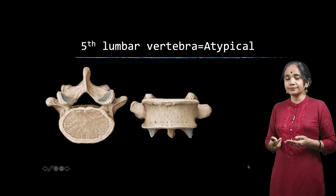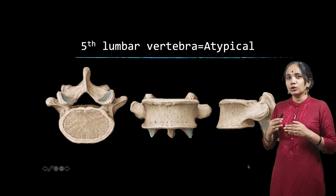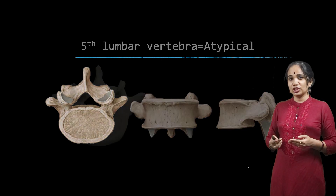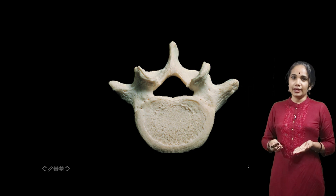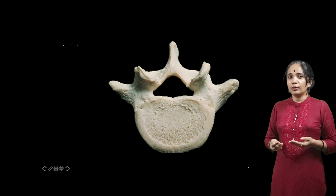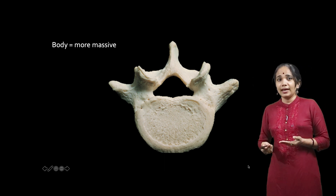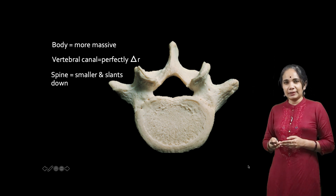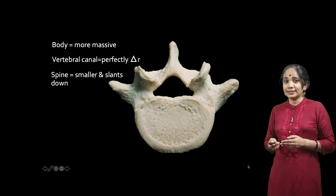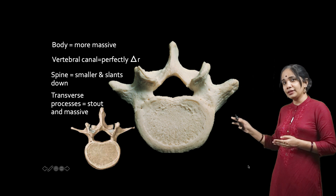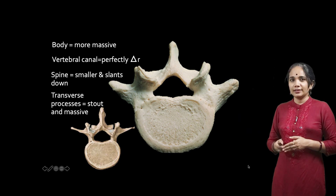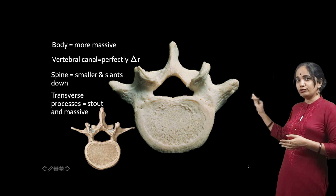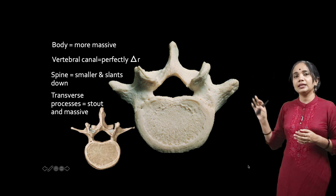L5 is more massive and more broad. Its inferior border is more pronounced forward so that it can be congruent with the promontory of the sacrum. Comparing the features of L5 with the typical lumbar vertebra: the body is obviously more massive, the vertebral canal is perfectly triangular, the spine is much smaller and slightly downward-slanting, and the transverse processes are really short. In the typical vertebra the transverse processes are slender, while in L5 the transverse process is really massive.